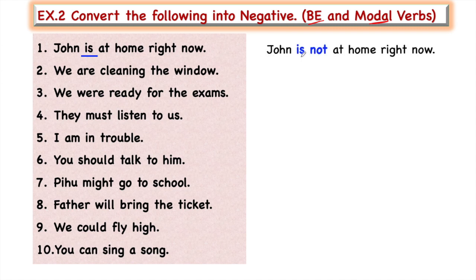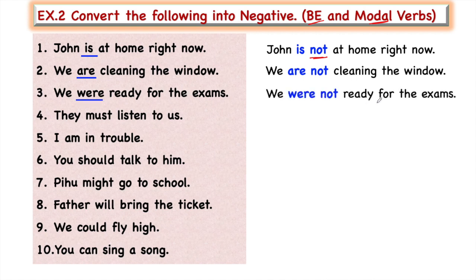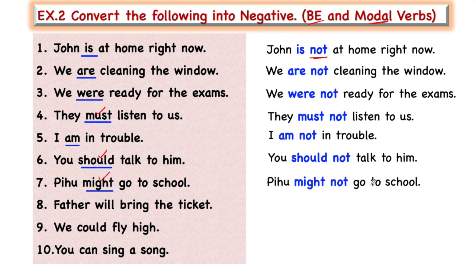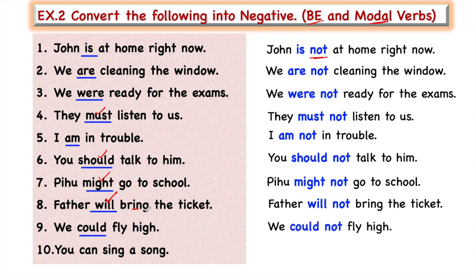'John is at home right now' → 'John is not at home right now.' 'We are cleaning the window' → 'We are not cleaning the window.' 'We were ready for exams' → 'We were not ready for exams.' 'They must listen to us' — modal verb — 'They must not listen to us.' 'I am in trouble' → 'I am not in trouble.' 'You should talk to him' → 'You should not talk to him.' 'Pihu might go to school' — 'might' is modal — 'Pihu might not go to school.' 'Father will bring the ticket' → 'Father will not bring the ticket.' 'We could fly high' → 'We could not fly high.' 'You can sing a song' → 'You cannot sing a song.'